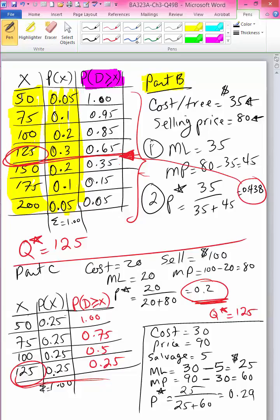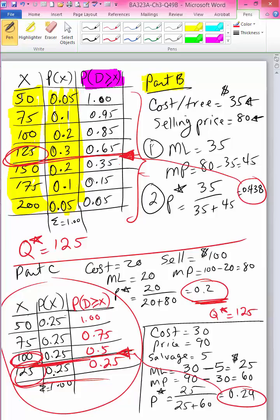So now I'm going to take this 0.29 and place it along this probability column, assuming that these are still the probabilities that apply. So 0.29 would fall right over here because it's between 0.25 and 0.5. And then I would come here and pick the quantity above it. So for this problem that I just made up, Q star is 100 units.